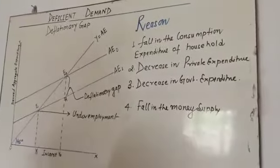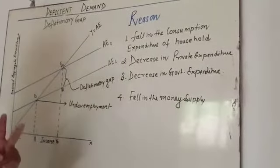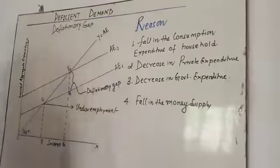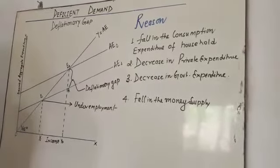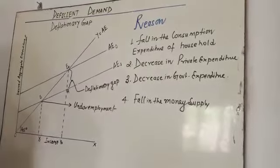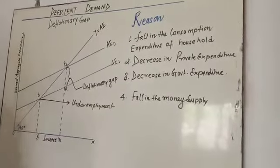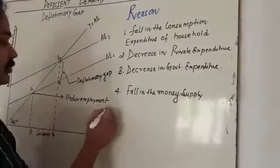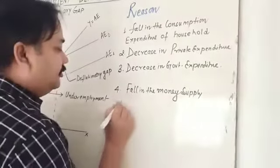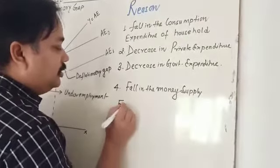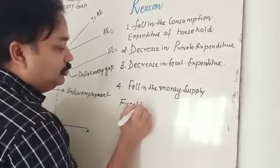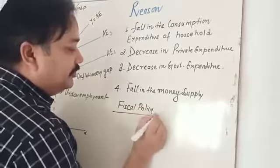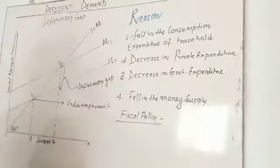My dear students, we have already studied that there are corrections of two measures — fiscal policy and monetary policy. Fiscal policy is used to correct the deficit demand or excess supply.